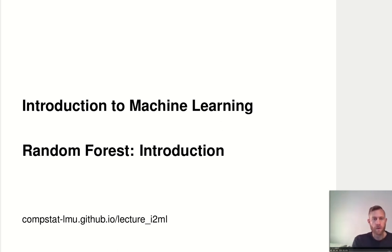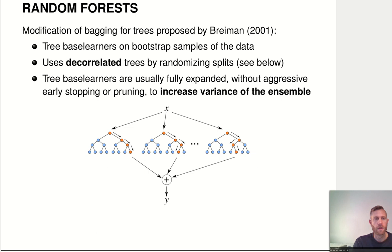Welcome to the next video lecture in Introduction to Machine Learning. So now, after we've talked about bagging, we can finally start talking about random forests. Random forests are essentially bagging for classification and regression trees, introduced by Breiman in 2001.